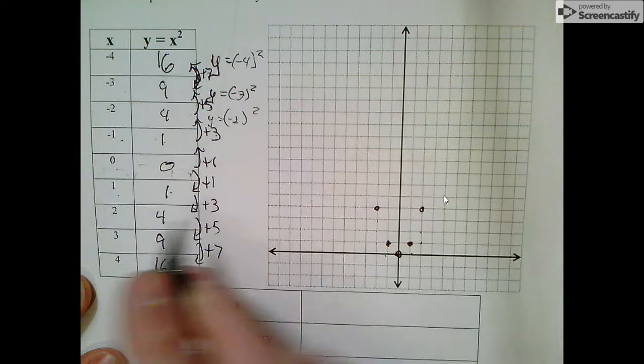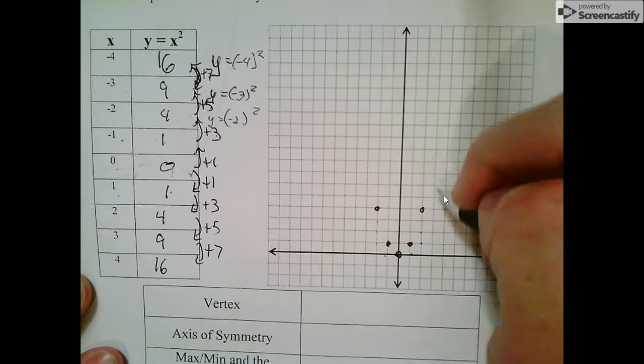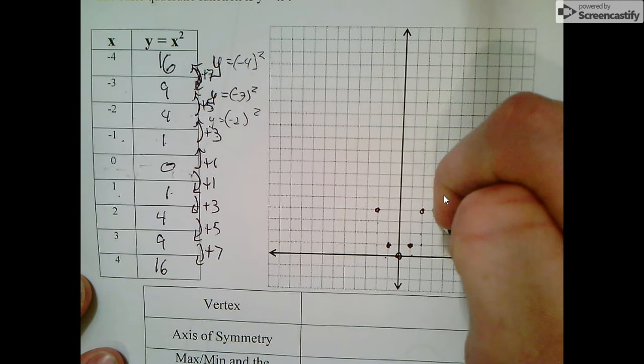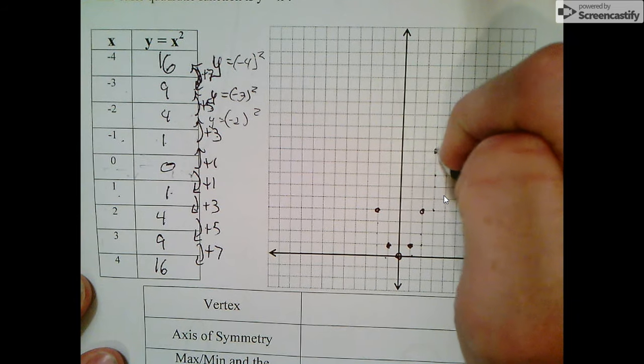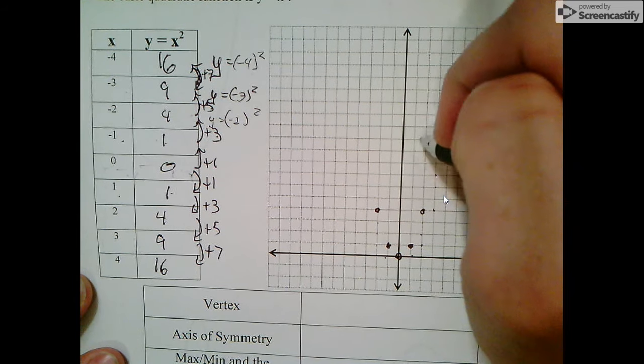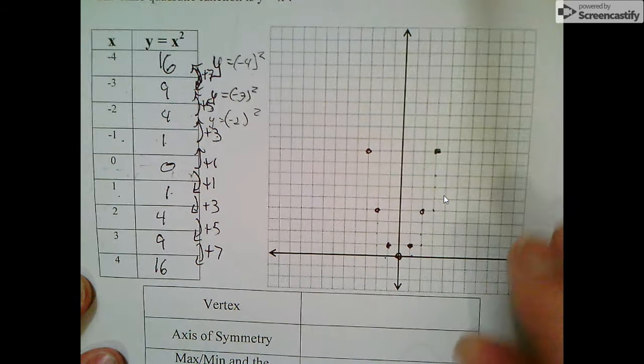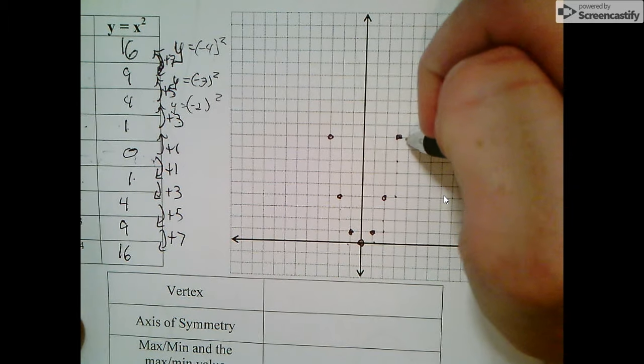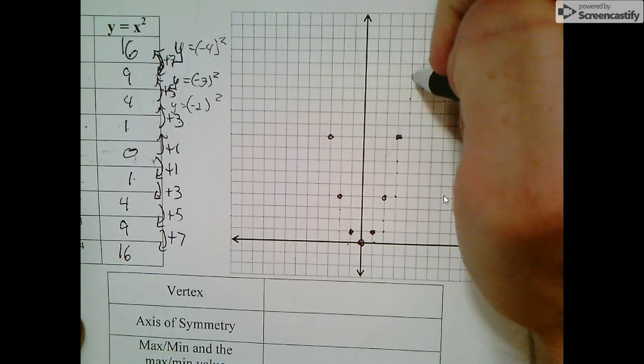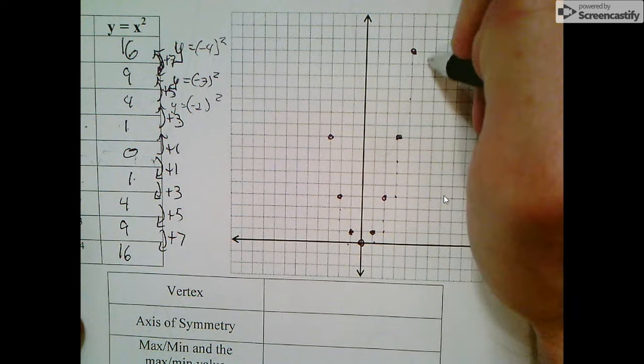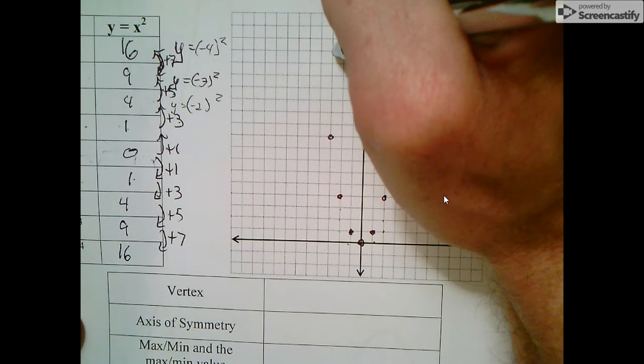Same thing on the other side: 1, 2, 3. That's the point (-2, 4). Then (3, 9), and the same on the other side. Then we can go to (4, 16), and 16 on the other side as well.